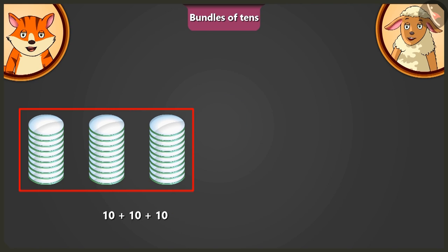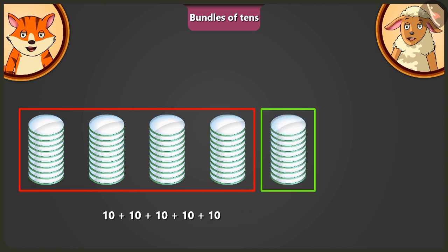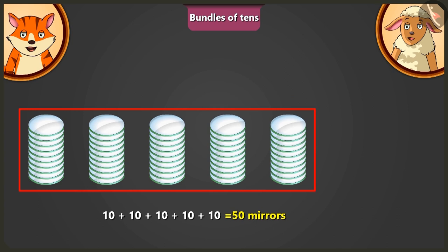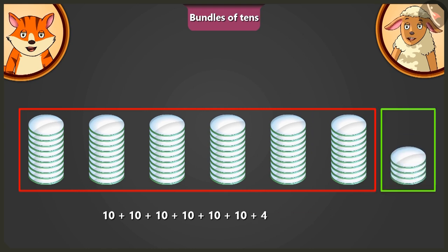Adding another 10 to 30, we get 40. Now, adding another 10 to 40 makes it 50. Now, adding the remaining 10 to 50 makes it 60. Now, adding 4 mirrors to 60 will make it 64 mirrors.